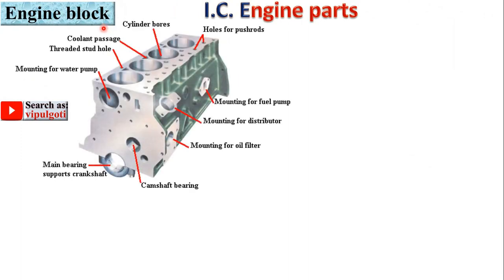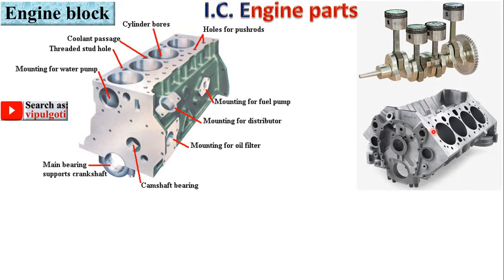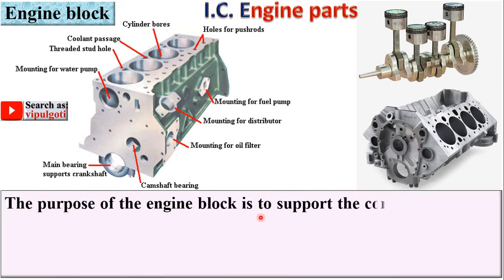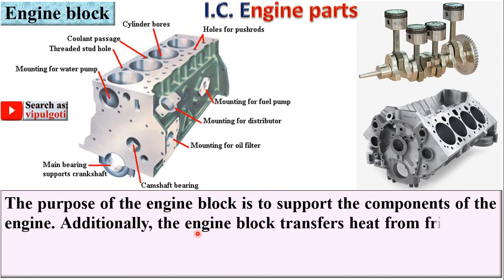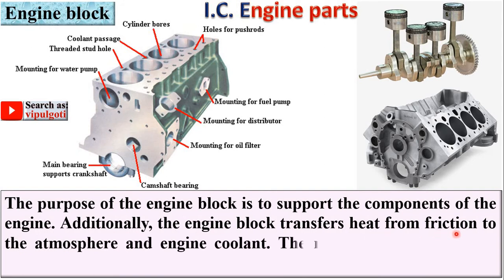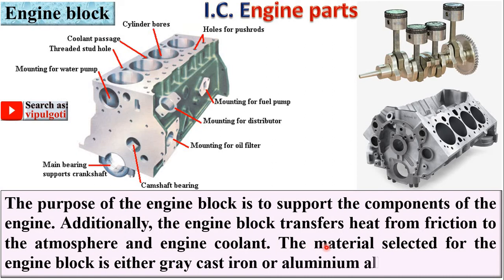Next part: engine block. Here you can see the engine block — the crankshaft and piston are mounted within this engine block. The purpose of the engine block is to support the components of the engine. Additionally, the engine block transfers heat from friction to the atmosphere and to the engine coolant. The material selected for the engine block is either gray cast iron or aluminum alloy.